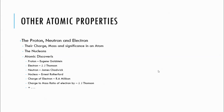Atomic discoveries: the proton was discovered by Rutherford, the electron by JJ Thomson, the neutron by James Chadwick, and the nucleus also by Rutherford. The charge-to-mass ratio of the electron was measured by JJ Thomson. The cathode ray tube was used to discover the electron, which is why electrons were first called cathode rays before being named electrons.